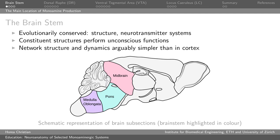You might ask yourself why we should be interested in the brainstem, which is the part of the brain where most of these neurotransmitter systems are localized. The first reason is that it is evolutionarily well conserved, meaning that the functions it is responsible for have a higher continuity between model animals and humans.